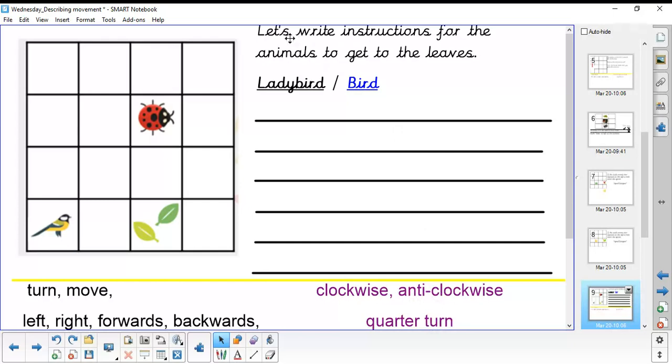Let's have a look at the questions asking. It says, let's write instructions for the animals to get to the leaves. Okay, well, we've got a ladybird and the leaves. And we've also got a bird trying to get to the leaves. Have a quick think about what you would write in a sentence to get the ladybird first to the leaves. You've got the key words down here, as I said. If you need to pause this video to write your answer down, that's fine.